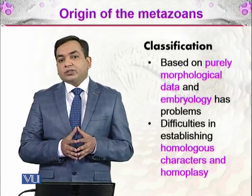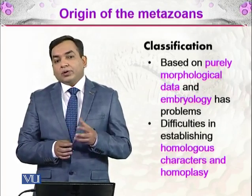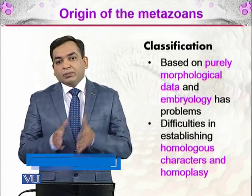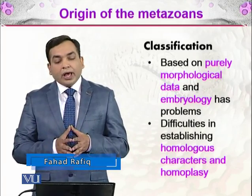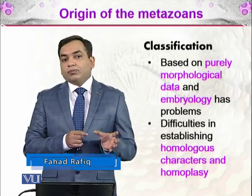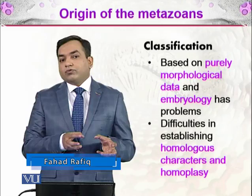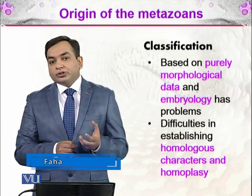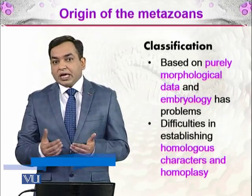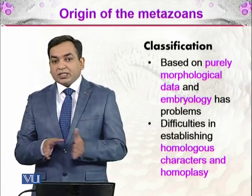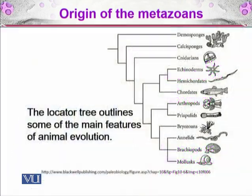Homologous characteristics are the characteristics which are similar among different groups of animals. Homoplasty means that their life forms and living structures are the same — that is called homoplasty. 'Homo' means the same, 'plasty' means the structure.